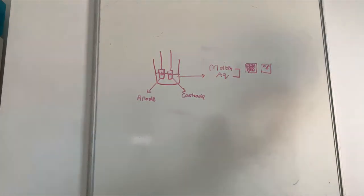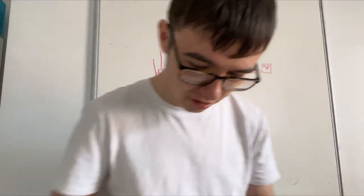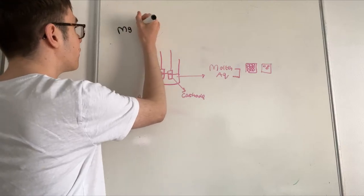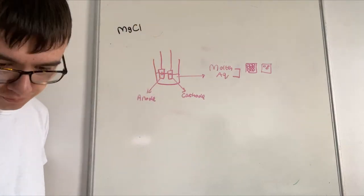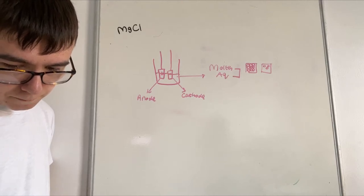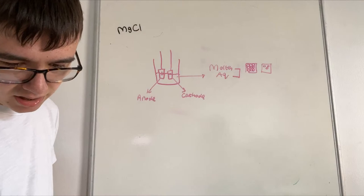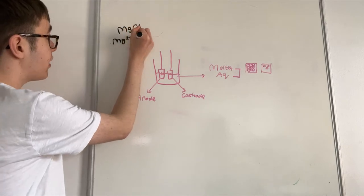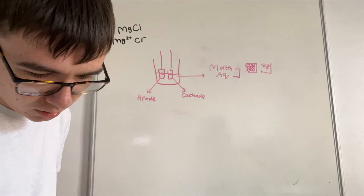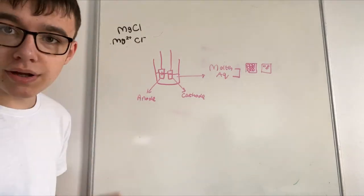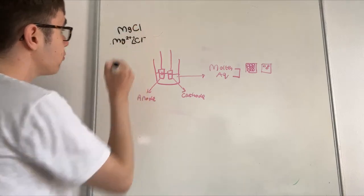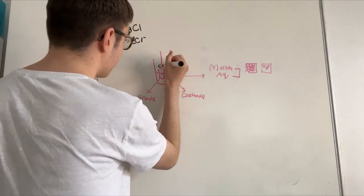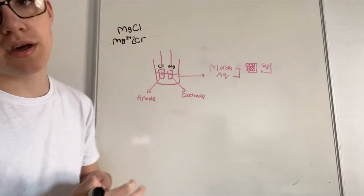We can do ionic half equations to explain this in more detail. For example, if we were doing electrolysis of magnesium chloride, you would have magnesium 2+ and chlorine negative. Chlorine is diatomic so it has a 2 there. That means chlorine is attracted to the anode and magnesium is attracted to the cathode, because opposites attract.